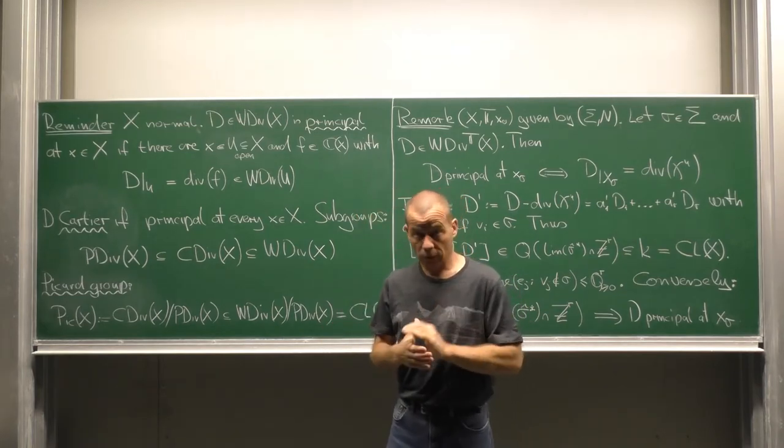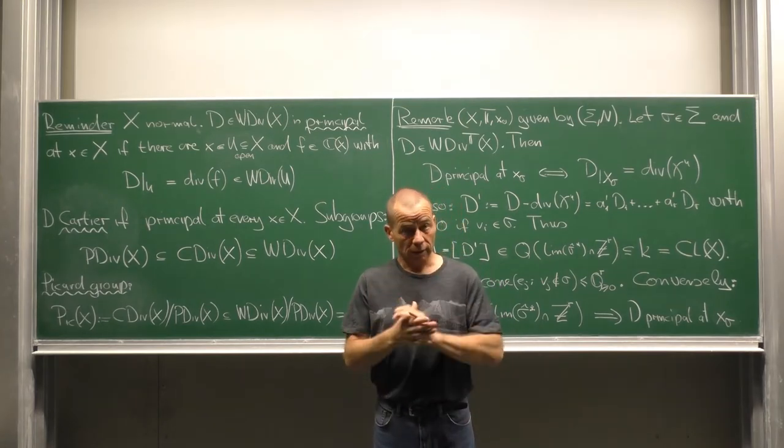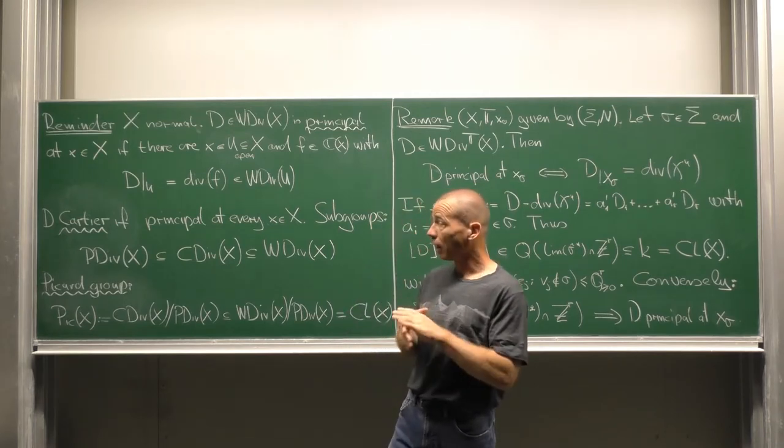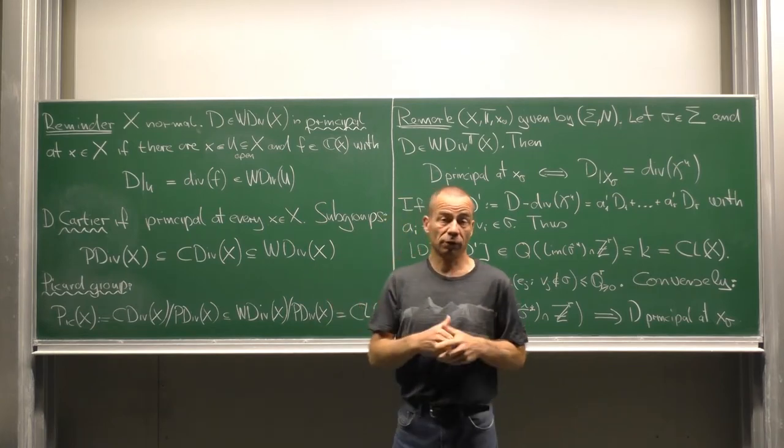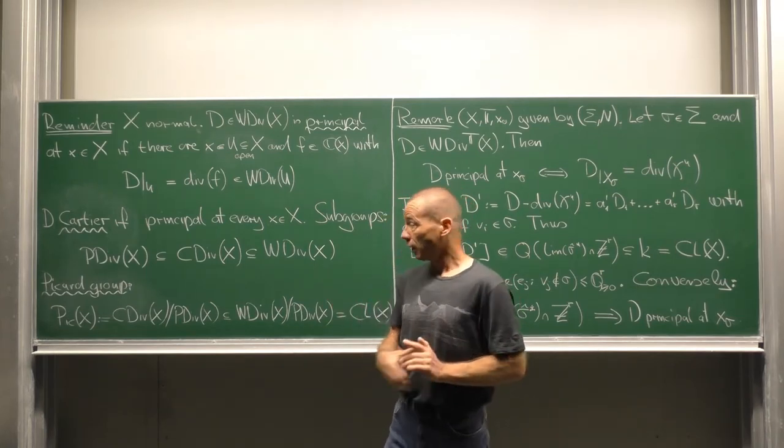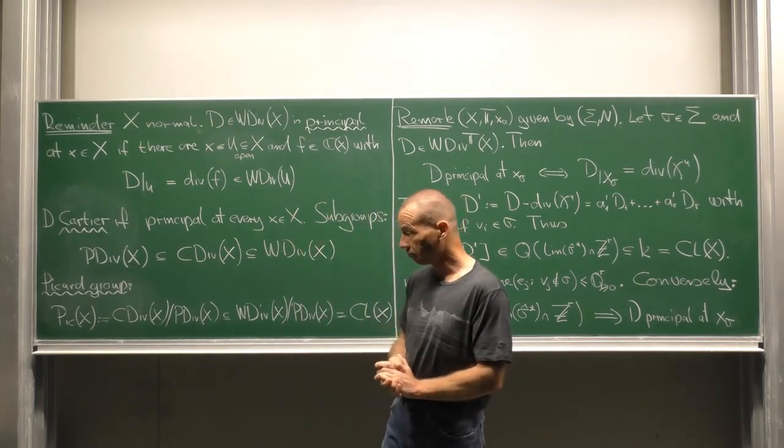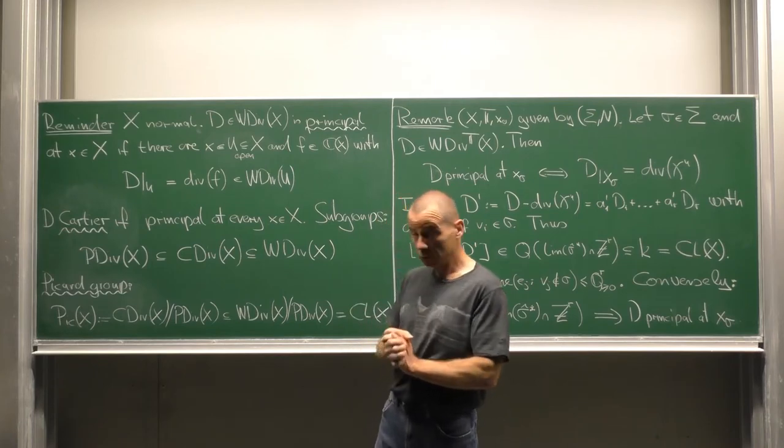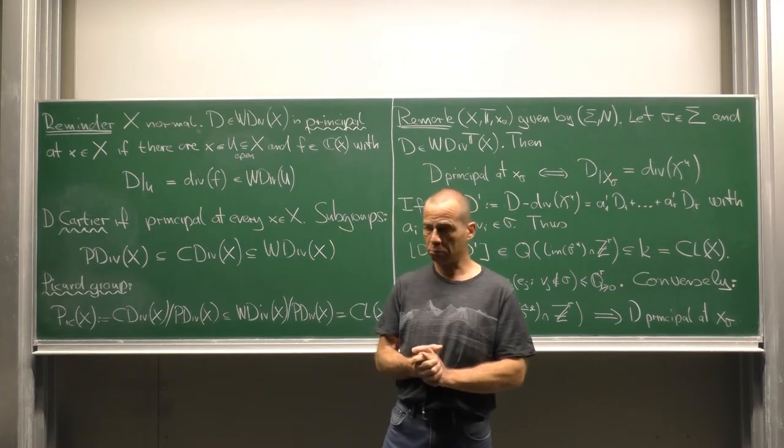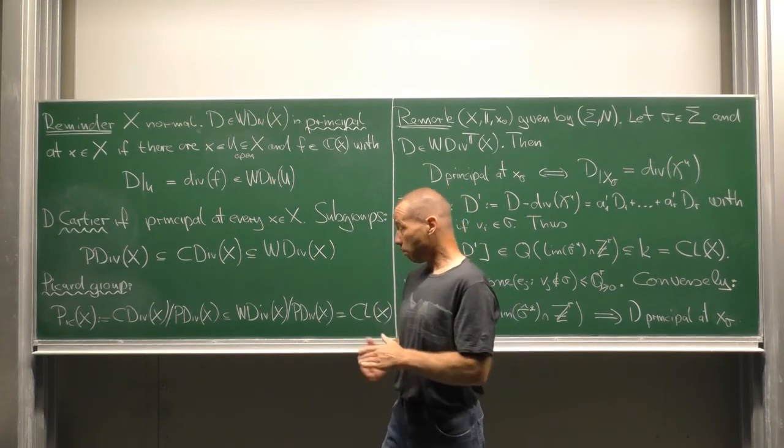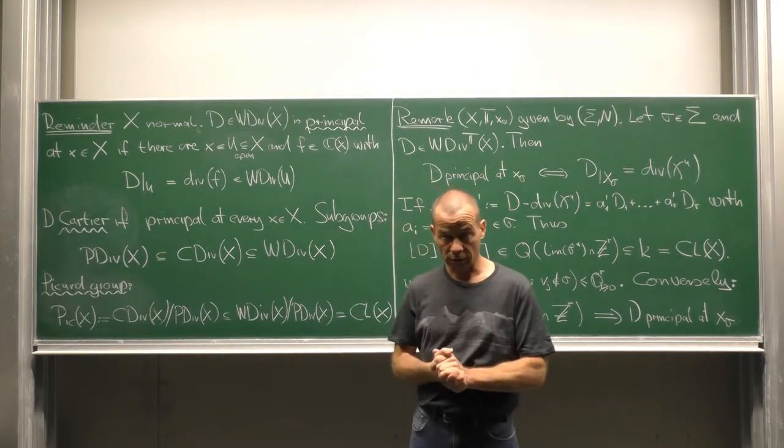Moreover, D is called a Cartier divisor if it is principal at every point of x. The set of all Cartier divisors is a subgroup of the while divisor group and it contains the group of all principal divisors. The PICAR group is the factor group of the group of Cartier divisors modulo the subgroup of principal divisors. By construction this PICAR group sits inside the divisor class group of X.